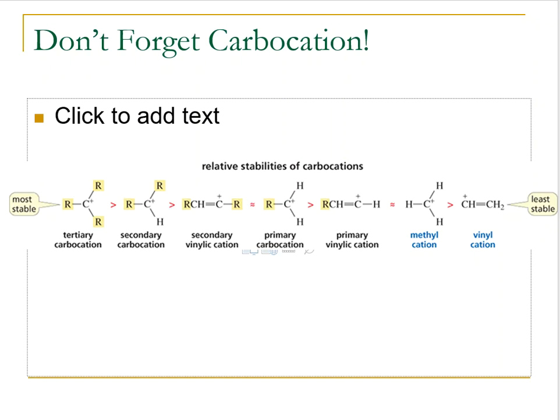We talked about carbocation stability — it's still the same: tertiary is more stable than secondary, which is more stable than primary. The difference now is that we'll have vinylic carbocations to squeeze into our list, because we're starting with triple bonds that break into double bonds. Primary vinylic is the lowest; tertiary is still the most stable.